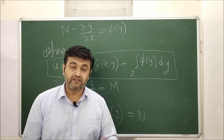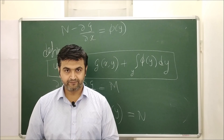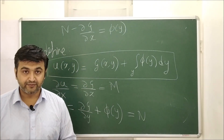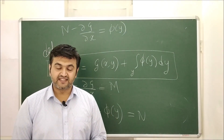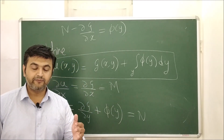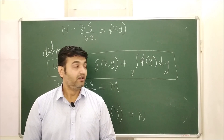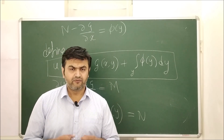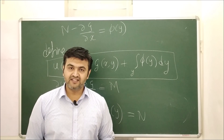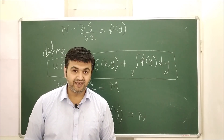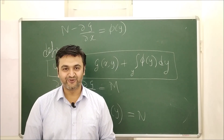So under the given conditions we can always construct u such that ∂u/∂x = M and ∂u/∂y = N, meaning such a u always exists, and therefore the given first-order differential equation is exact. This completes the two-sided proof: a first-order differential equation is exact if and only if ∂M/∂y = ∂N/∂x. I hope the proof is clear. If you have any doubts, ask in the comments, and if everything is clear, please support by liking, subscribing, and sharing the video. Thank you.